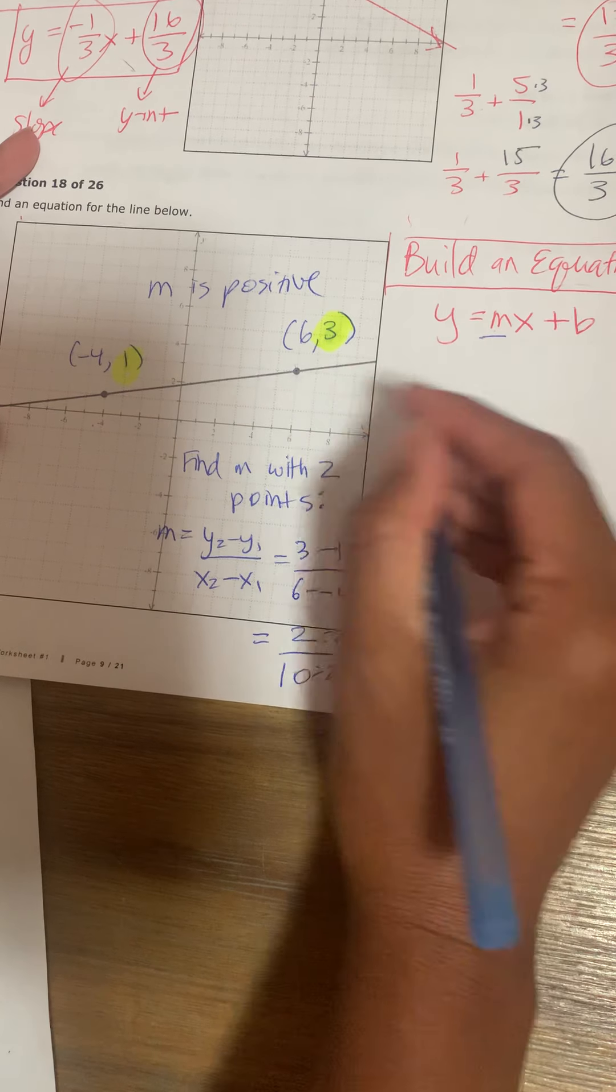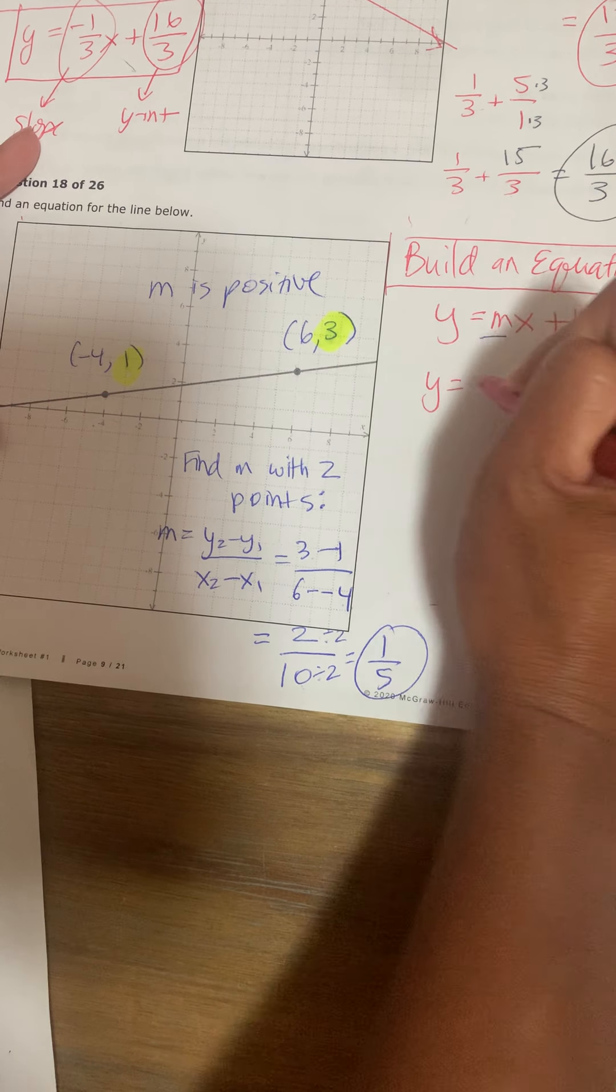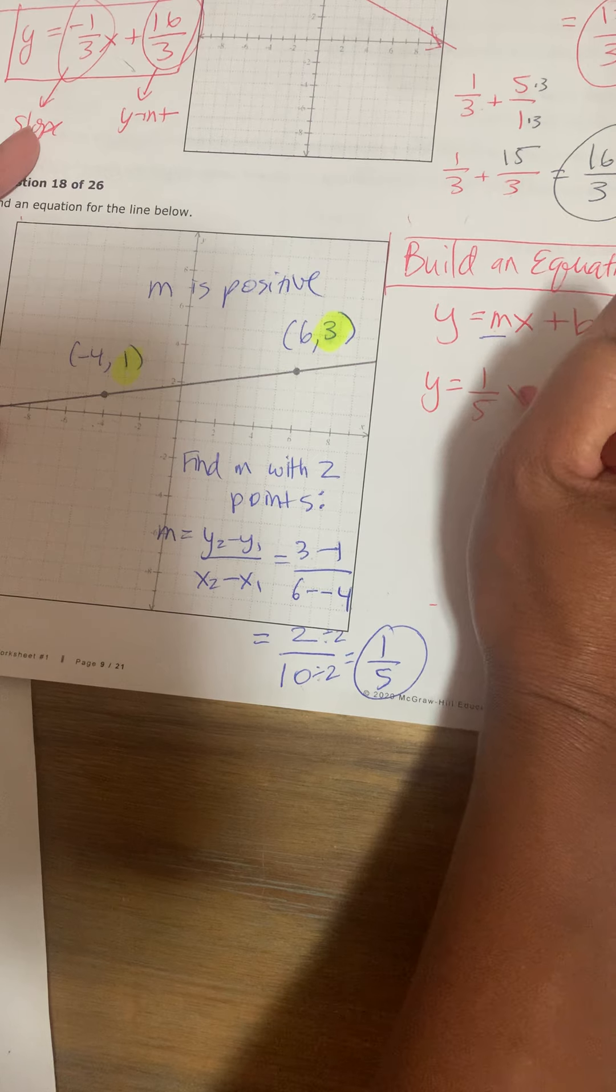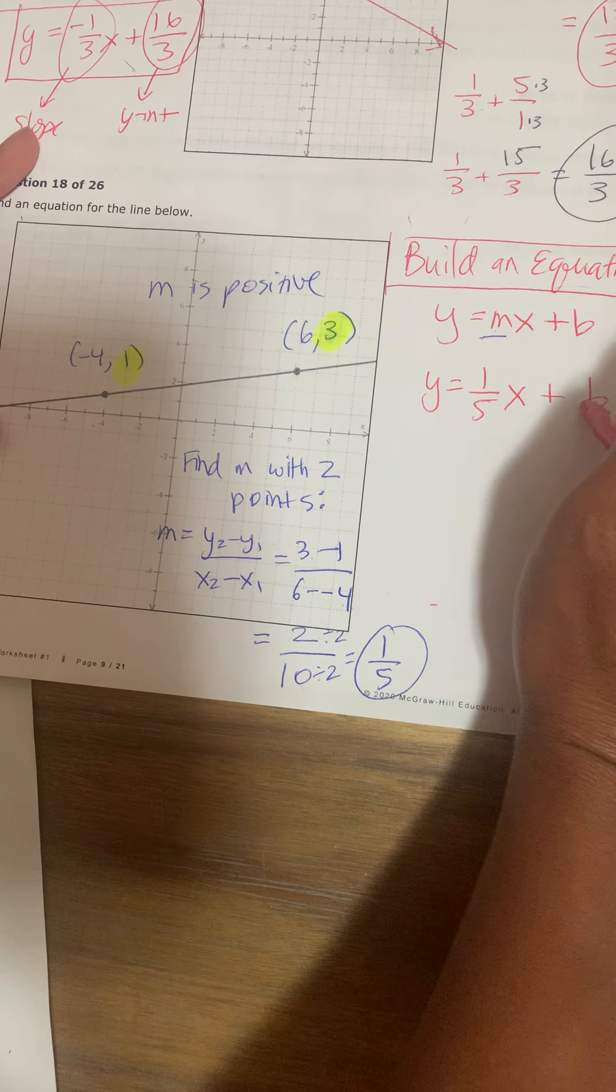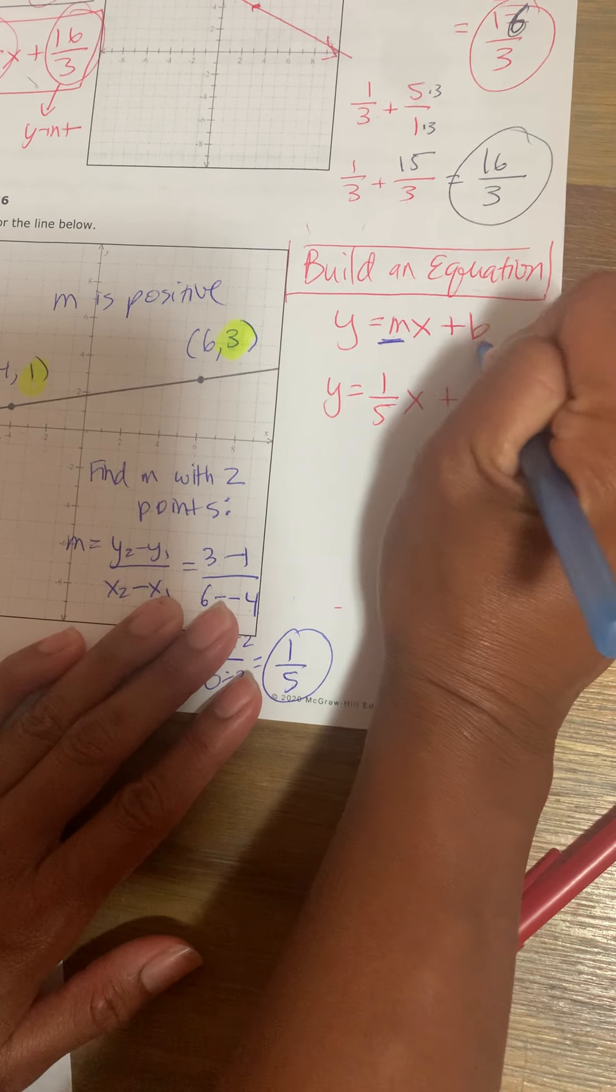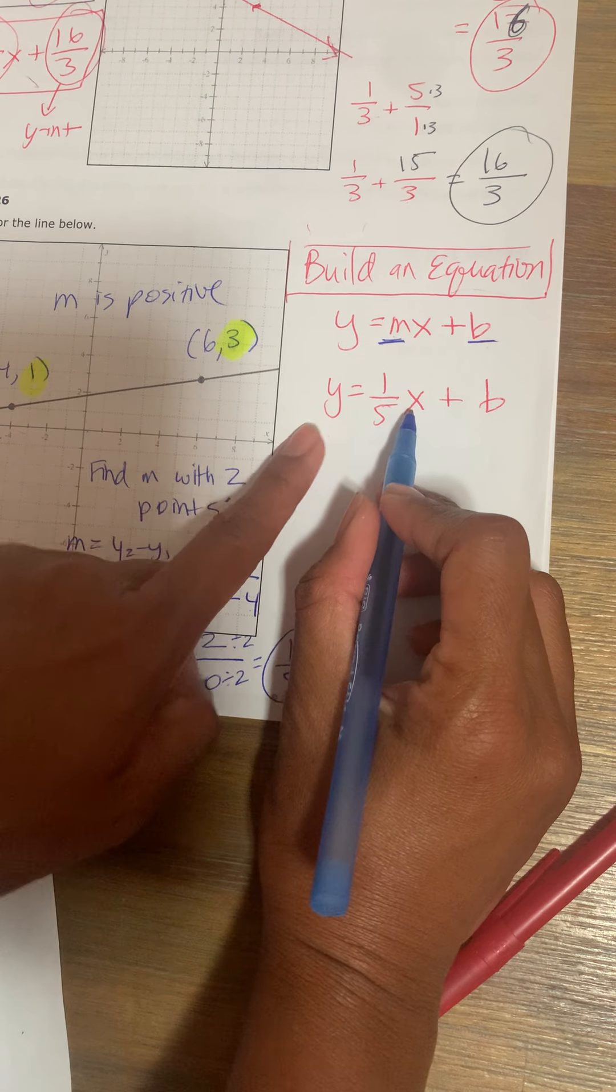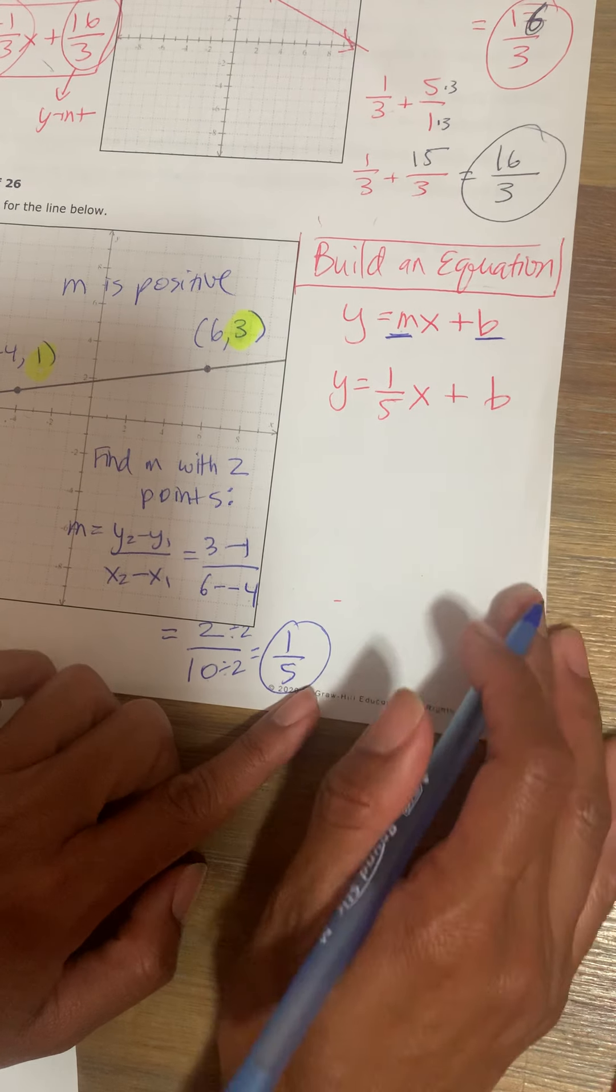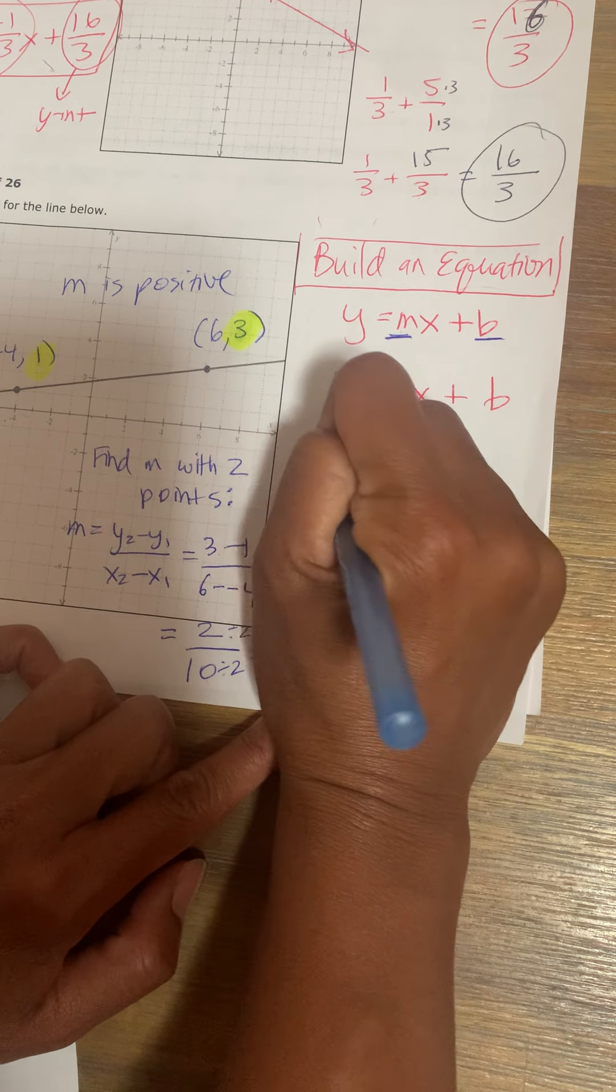So when I write this problem, I'm going to have y is equal to 1 fifth x plus b. When I am building an equation, I just need to find out what m is and what b is. I leave the x and y as is. So now I need to find out what b is.